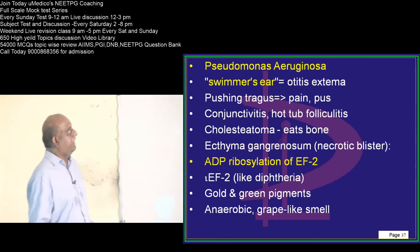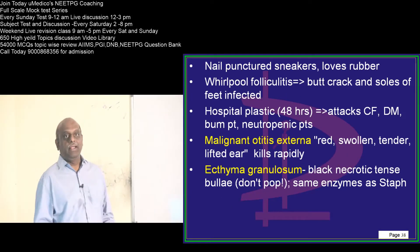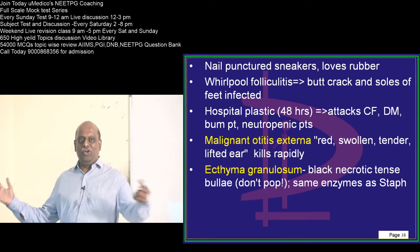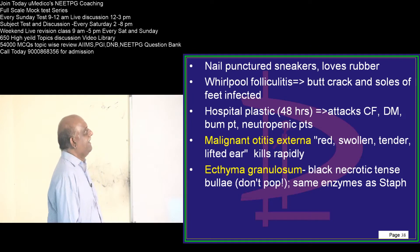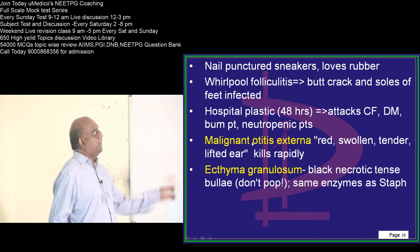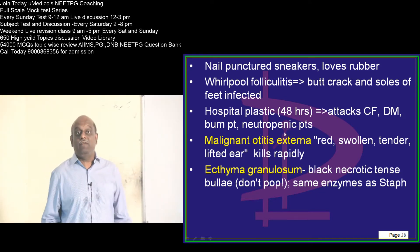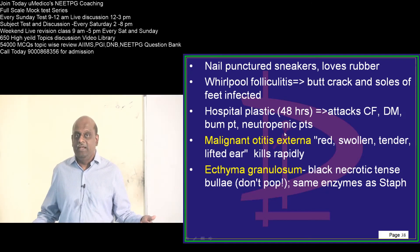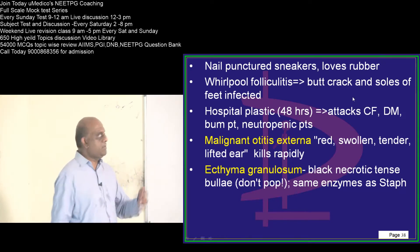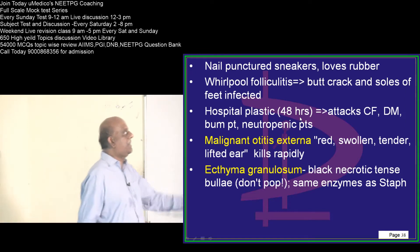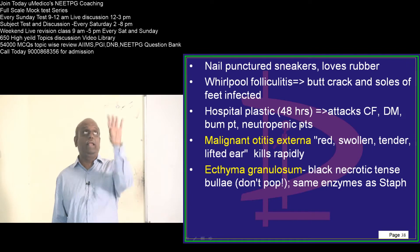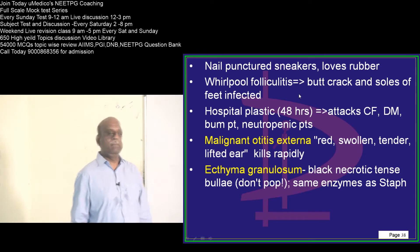Similarly, if you look at Pseudomonas, it loves all the rubber. Rubber reminds me of Kerala and all the rubber plantations. Nail-punctured sneakers are the ones who are at risk. Whirlpool folliculitis — even hospital plastic is a very common source for Pseudomonas spread. Those who have cystic fibrosis, diabetes, or are neutropenic patients — it is the hospital plastic that acts like a source of infection.